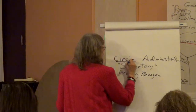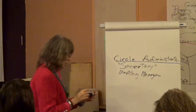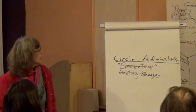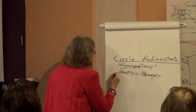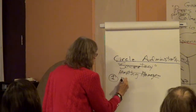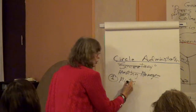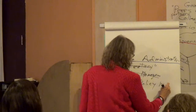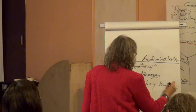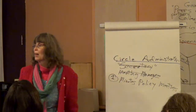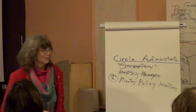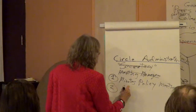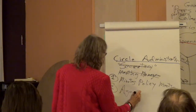The three things the circle administrator is responsible for are: first, the minutes or notes of policy meetings. When I say 'policy meetings,' I mean those meetings that cover all that governance and decision-making work, not just policies per se. Second, the agenda for that meeting.